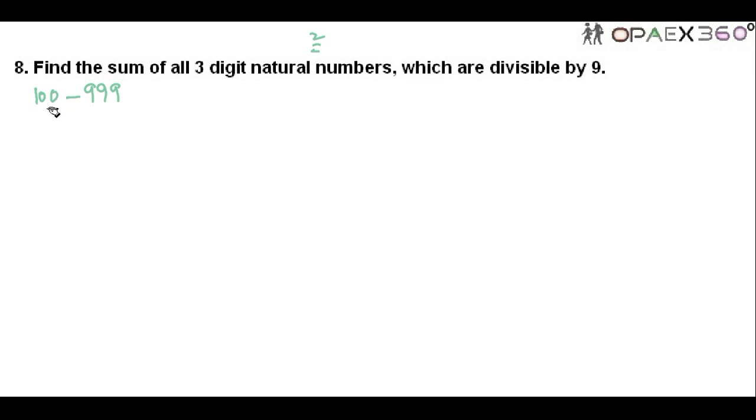First you find the minimum number which is divisible by 9 in three-digit. So divide 100 with 9, you get 10, so remainder is 1. Therefore 100 minus 1, so 99 is divisible by 9.